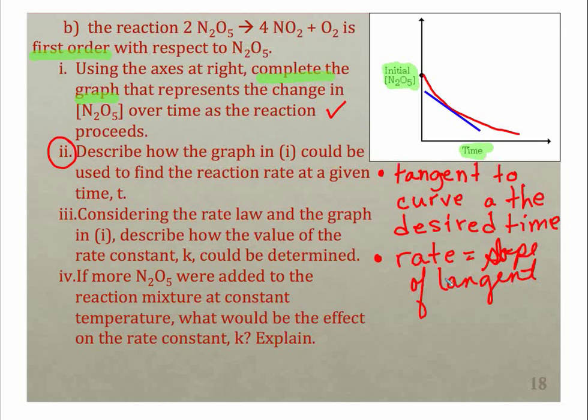You don't need complete sentences. Your bulleted list is just fine. So you want a tangent to the curve at your desired time, and then your rate is going to be equal to the slope of that tangent. It's very important you get those two concepts. Note also here that the rate is going to be a negative value. That's because we're measuring it with respect to a reactant, and reactants are consumed.